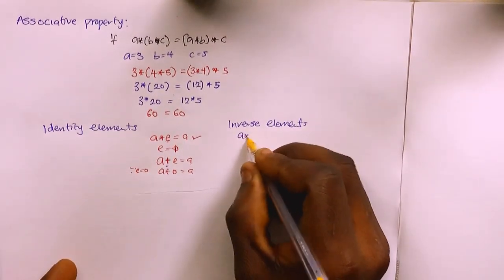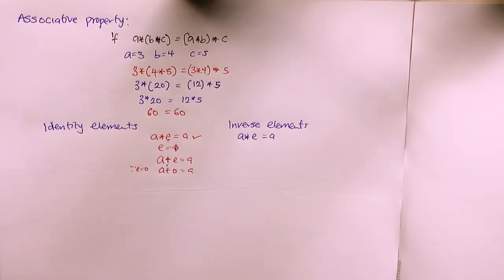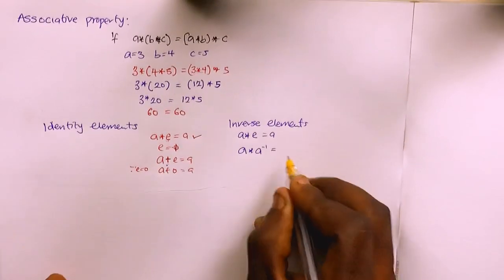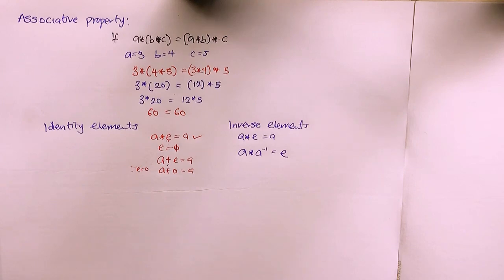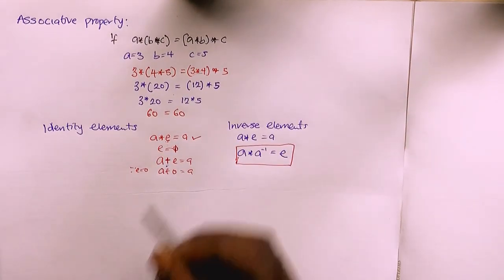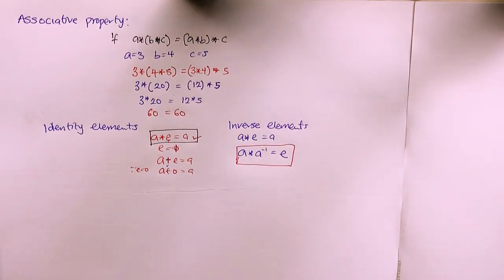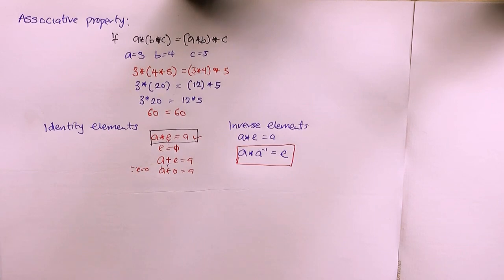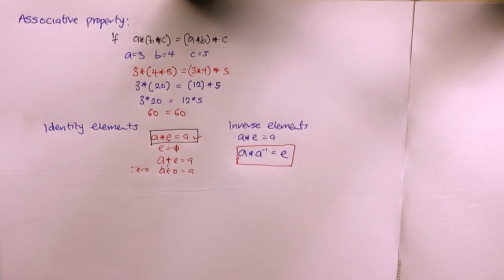For the inverse element, if a star e equals a defines the identity, then a star a-inverse equals e defines the inverse. To find the inverse element, you need a star a-inverse equals e. To find the identity element, you need a star e equals a. Under multiplicative operation e is 1; under additive operation e is 0.